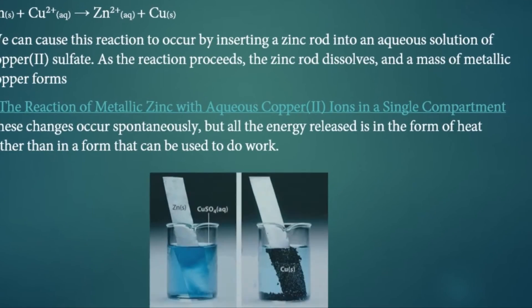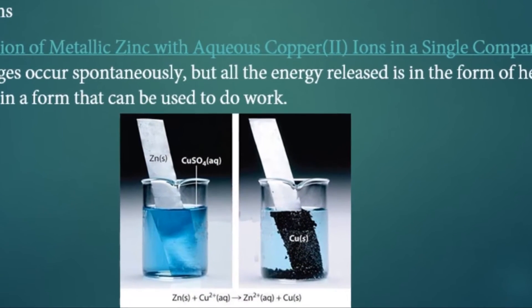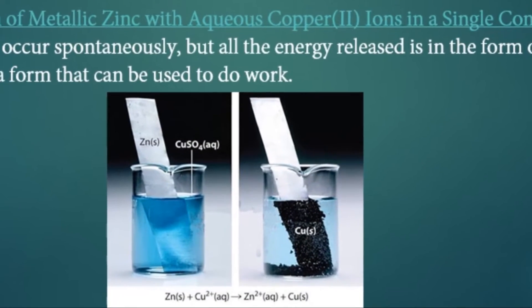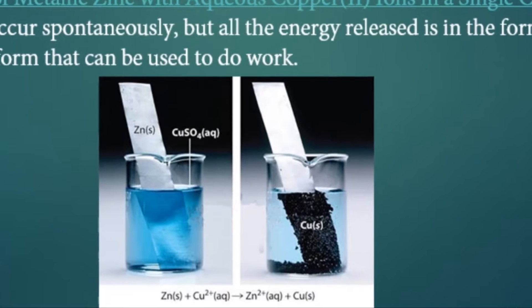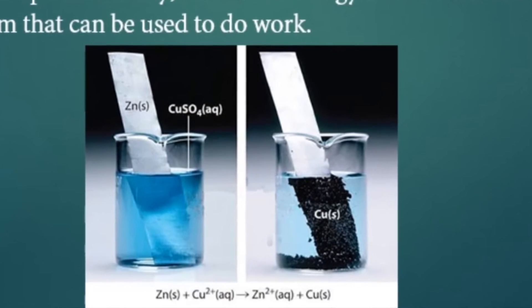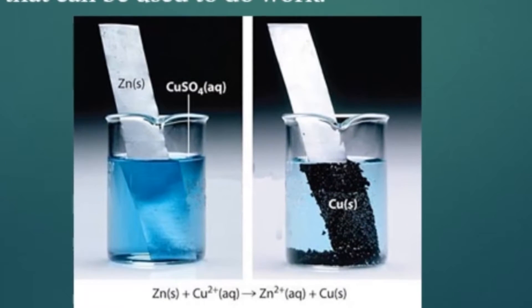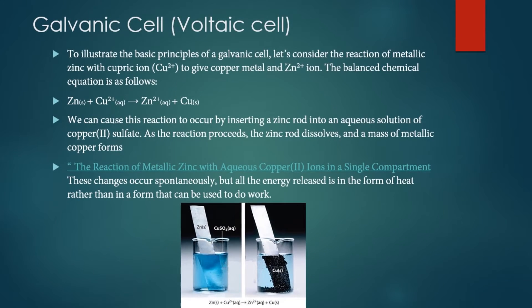This figure shows the dissolving of zinc metal in copper(II) sulfate solution, giving copper precipitate on the zinc rod. We can't use this reaction for generating electrical current.